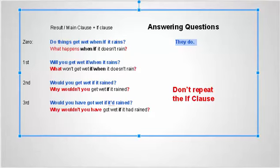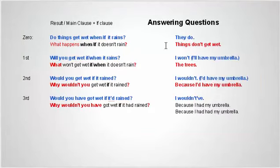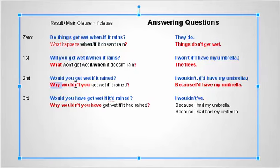Our answers: 'Do things get wet if it rains?' — 'They do.' / 'They don't.' 'Will you get wet if it rains?' — 'I won't.' / 'I will.' 'Would you get wet if it rained?' — 'I wouldn't.' And then we can ask wh-questions: 'Why wouldn't you?' 'Why wouldn't you get wet if it rained?' — 'Because I have my umbrella.' Yesterday: 'Would you have got wet if it had rained?' — 'I wouldn't have.' 'Why wouldn't you have got wet if it had rained?' — 'Because I had my umbrella' or 'Because I'd had my umbrella.' That's the best answer.